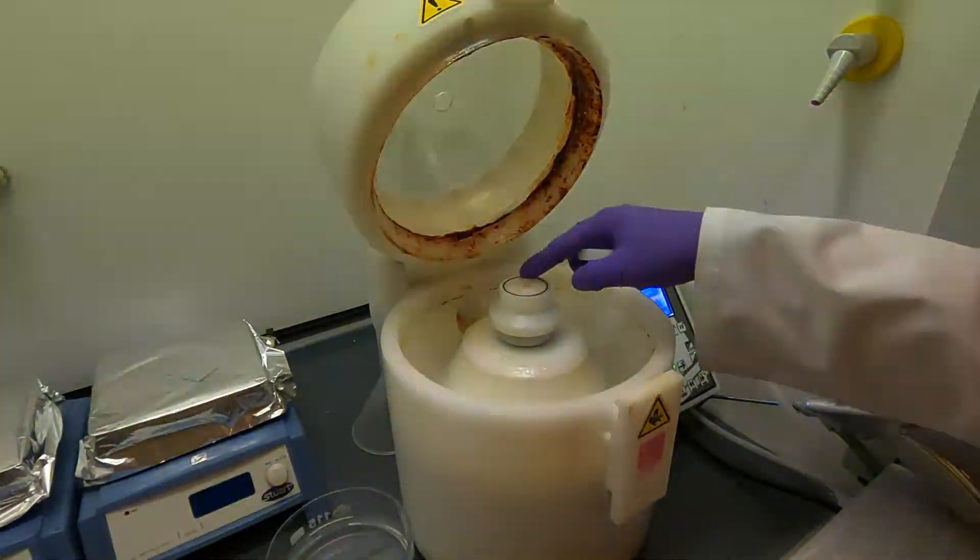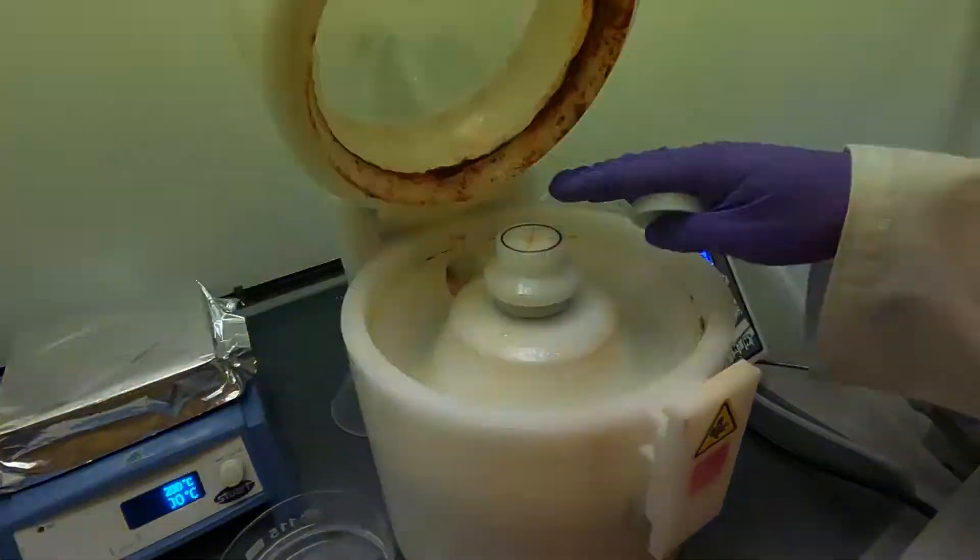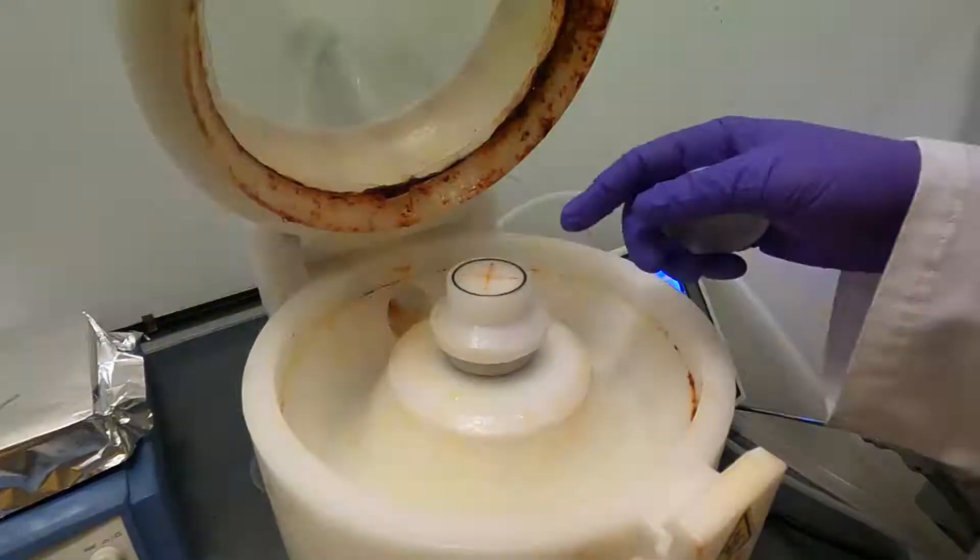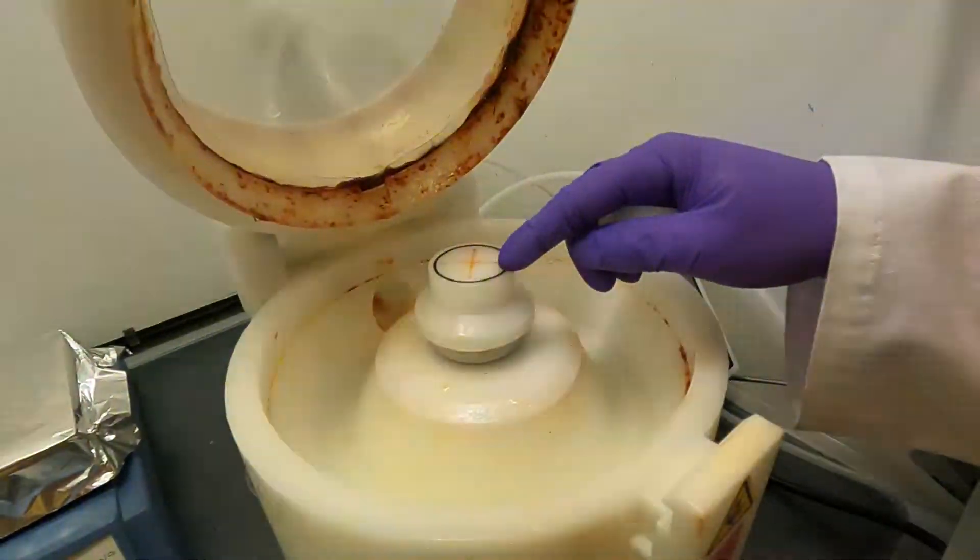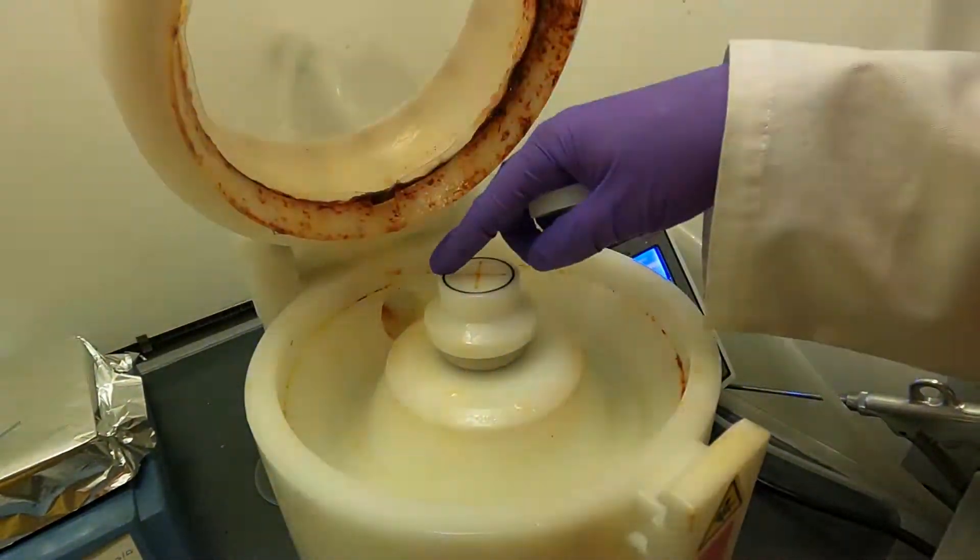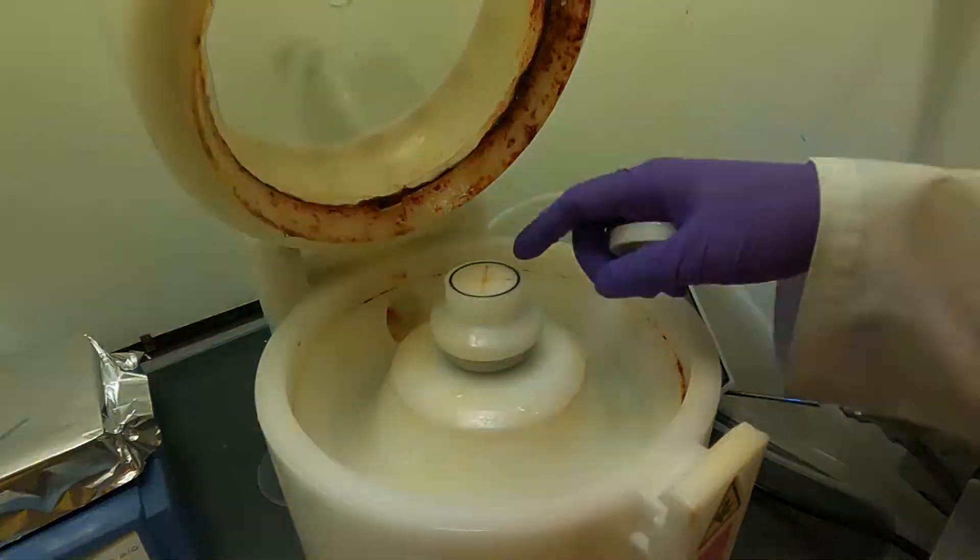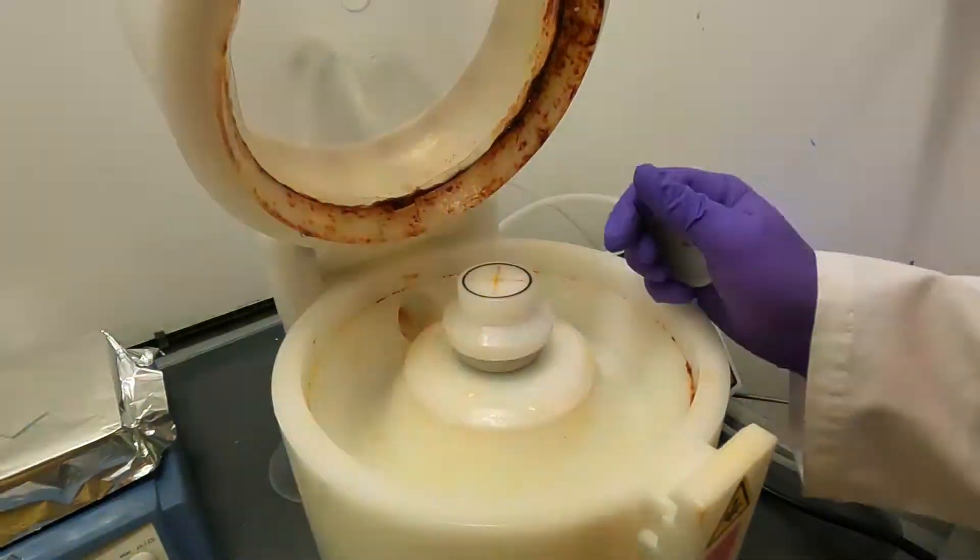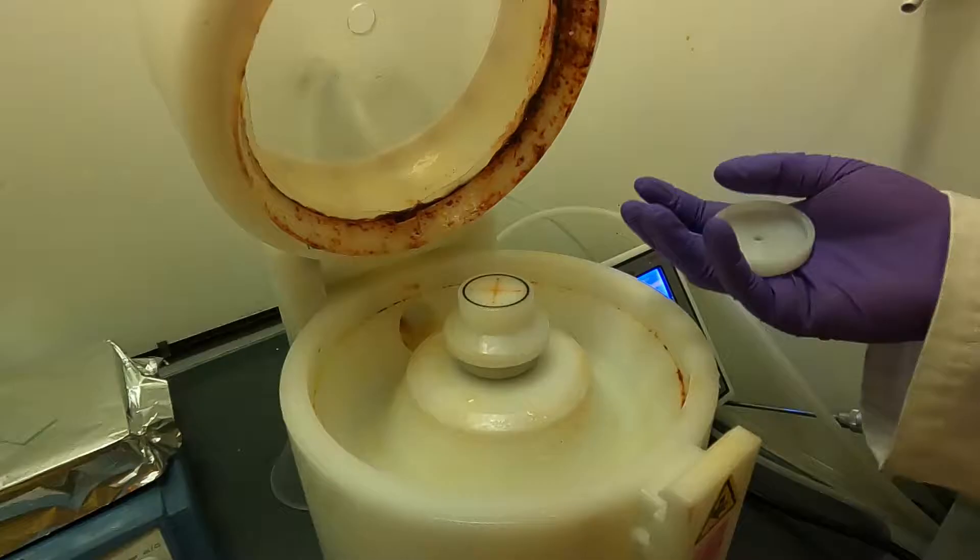You see this rubber ring, this makes a seal with the sample. So the sample is quite big, for example a silicon wafer or a glass wafer, you can put it directly on top of this chuck and this rubber ring will make contact with the sample and it will seal it in place.